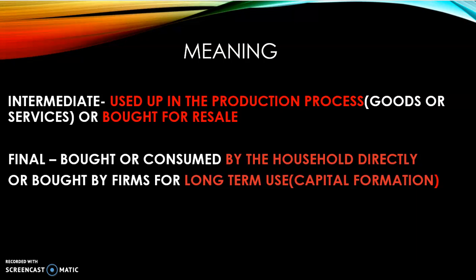Secondly, anything bought by firms for long-term use — for example, machinery, a printer, furniture — these are all part of long-term use, capital formation. They are not used up in the process. A machine is not used up. So kids are confused: if a machine is purchased by a company which is manufacturing, it is not used up in producing a t-shirt — it is used to make t-shirts. So it's long-term use, and therefore a final good. Final goods can be identified if a consumer consumes it directly, or if it is bought by a firm for long-term use.